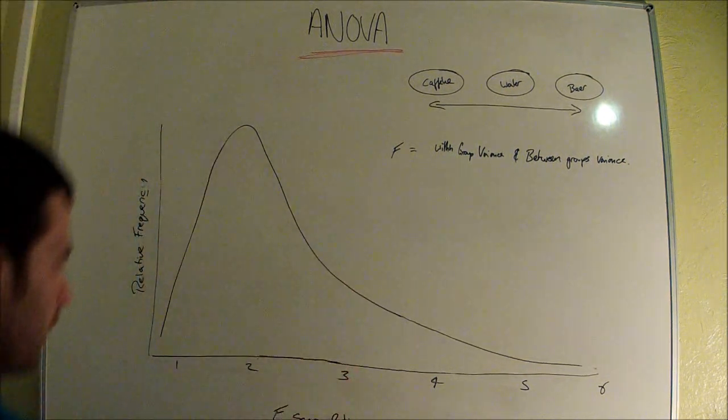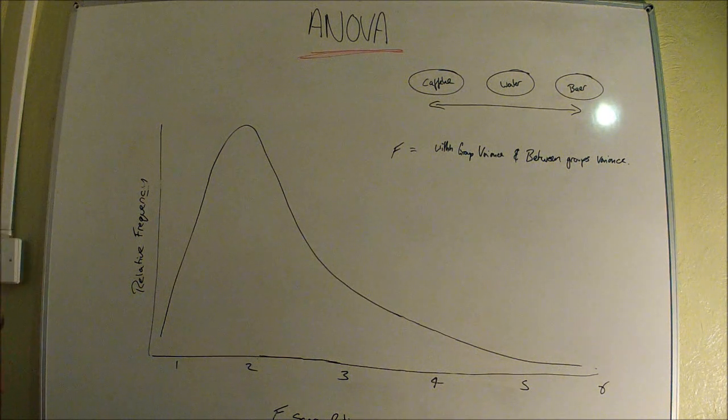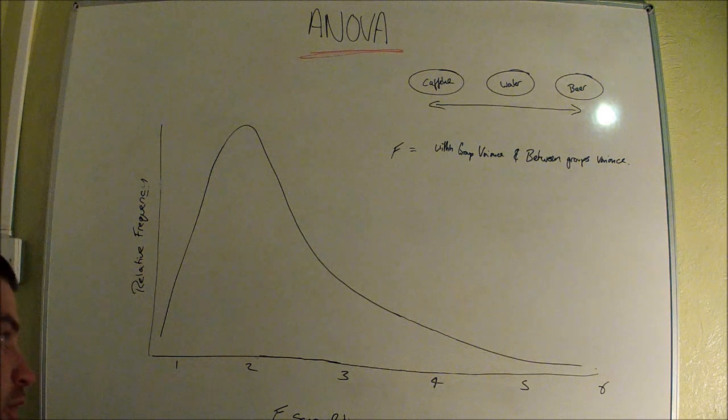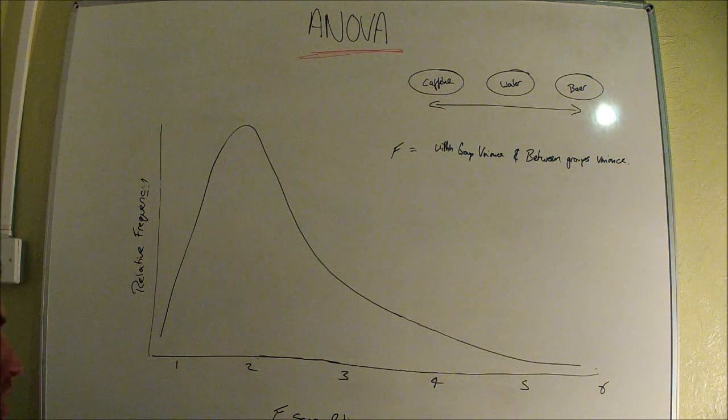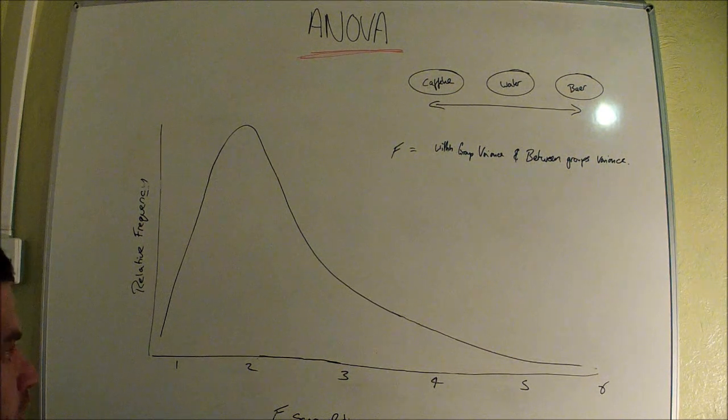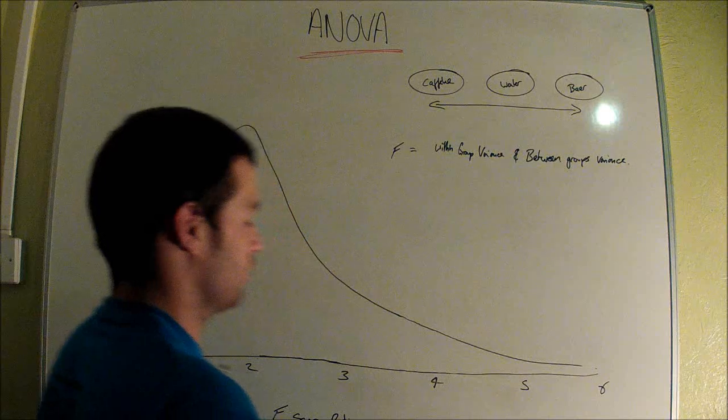Your critical F, which is what you're going to be comparing to, is determined by your degrees of freedom and the confidence level you'll be working to. Generally in sports science we work to 0.05, but you may be working to 0.01, which also takes into account your degrees of freedom.